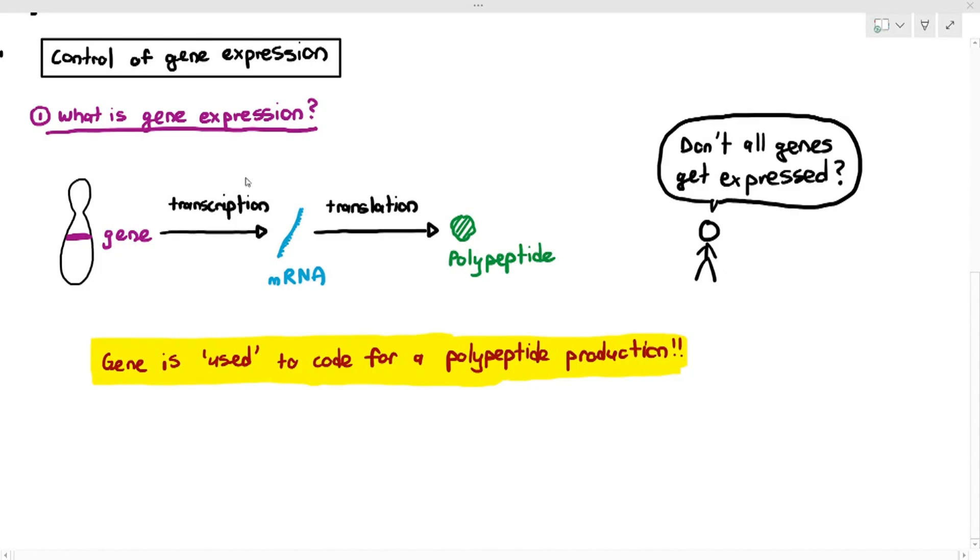Now, the reason why we use the word gene expression is to keep things simple. So instead of saying the gene undergoes transcription to produce the mRNA and the mRNA undergoes translation to produce the polypeptide, we can just say the gene is expressed. That's a simple way of saying things. That is the answer to question number one.